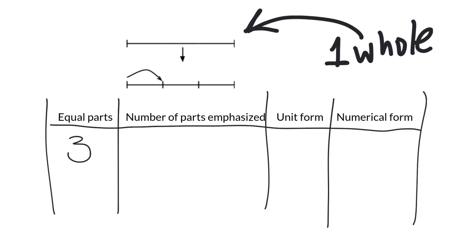Where do I see those three equal parts? I see one right here, one right here, and one right here. So we have three equal parts. Now this line is telling us that one of those three parts is being emphasized. And then the unit form - that one out of three - we're going to call that one-third. So we're going to write the number one and then the word third, T-H-I-R-D. One-third is what that unit form represents.